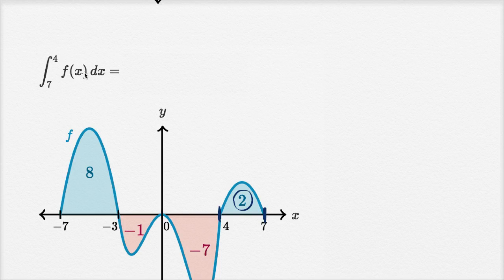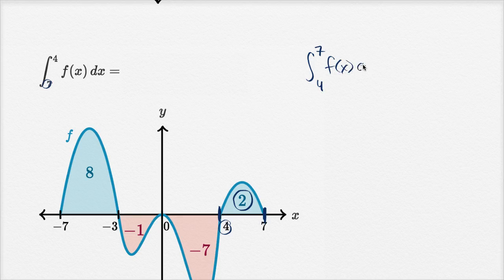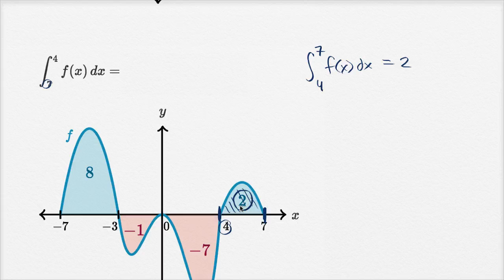But the key realization is this area only applies when you have the lower bound as the lower bound and the higher value as the higher bound. So the integral from four to seven of f of x dx, this thing is equal to two. This thing is depicting that area.